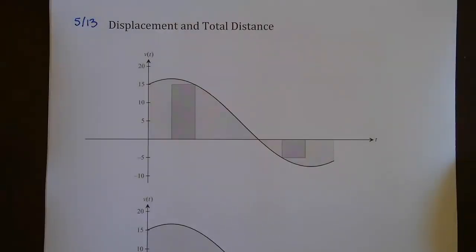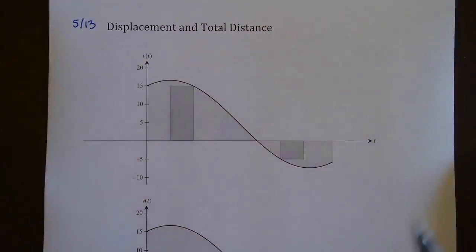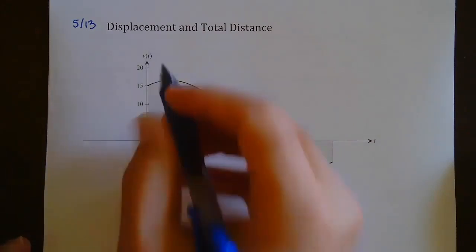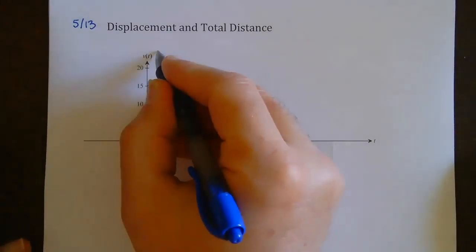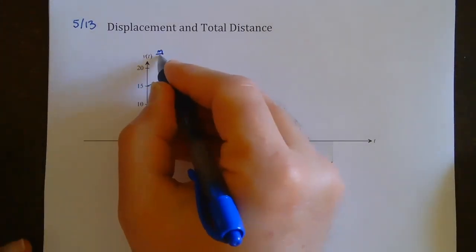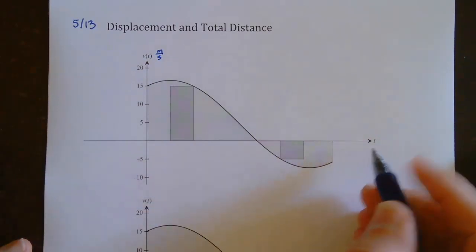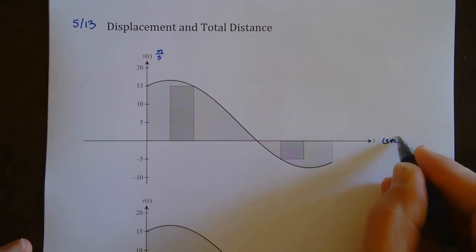Today is May 13th, and we're going to talk about displacement and total distance of a particle that's being moved. So we're looking right now at a velocity graph. The vertical axis is velocity, measured in meters per second, and the horizontal axis is time, measured in seconds.